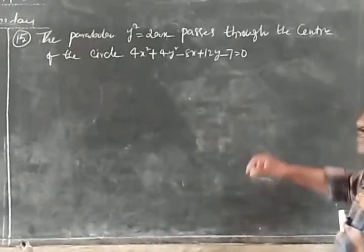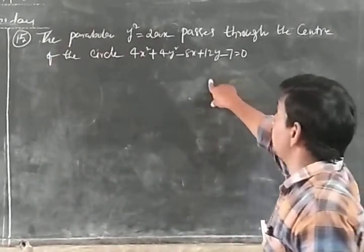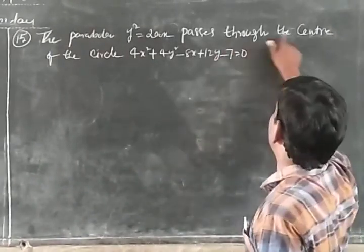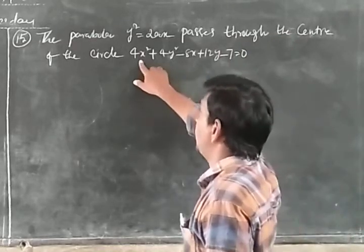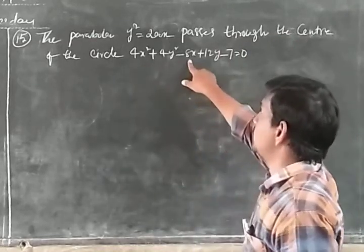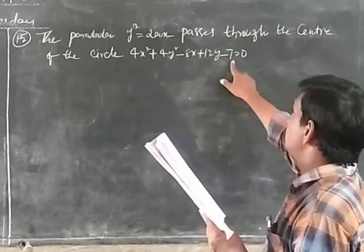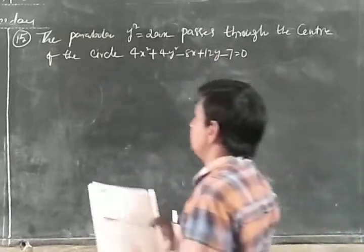The given parabola is y² = 2ax, which passes through the center of the circle: 4x² + 4y² − 8x + 12y − 7 = 0.